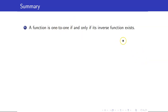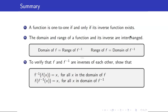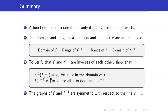To summarize: a function is one-to-one if and only if its inverse function exists. The domain and range of a function and its inverse are interchanged. To verify that f and f inverse are inverses of each other, show that they sort of cancel each other. And lastly, the graphs of f and f inverse are symmetric with respect to the line y equals x.